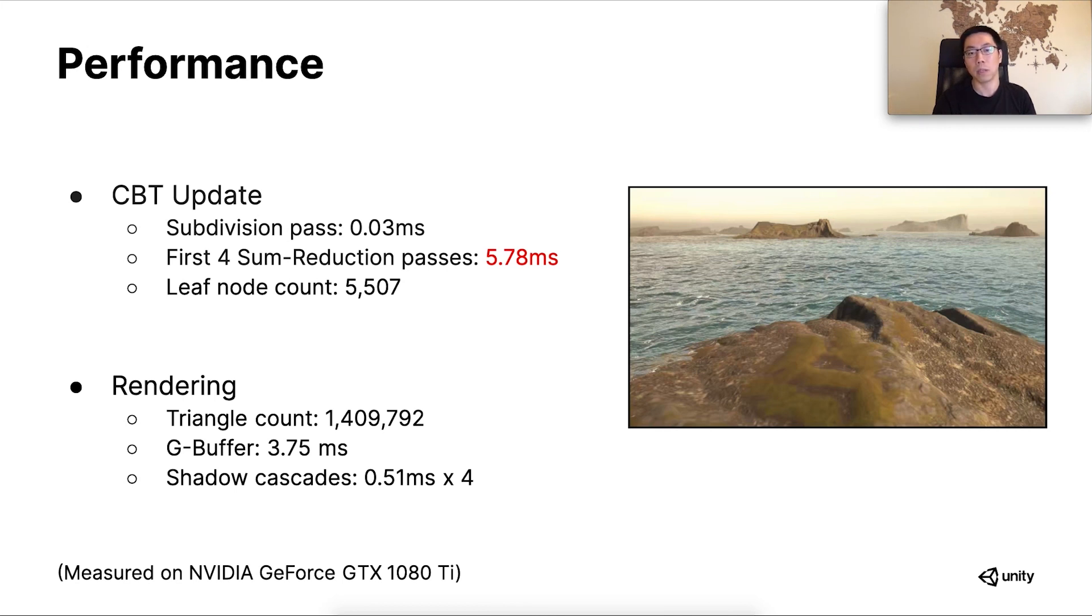The sum reduction passes, however, are the slowest among all the CBT update passes. On a middle-tier hardware, we measure 5.78 milliseconds for the first four passes, which are the most expensive. You may notice that the rendering time of the terrain geometry isn't ideal either. I'll list some of the ideas later in the talk that the team will be experimenting in the near future.